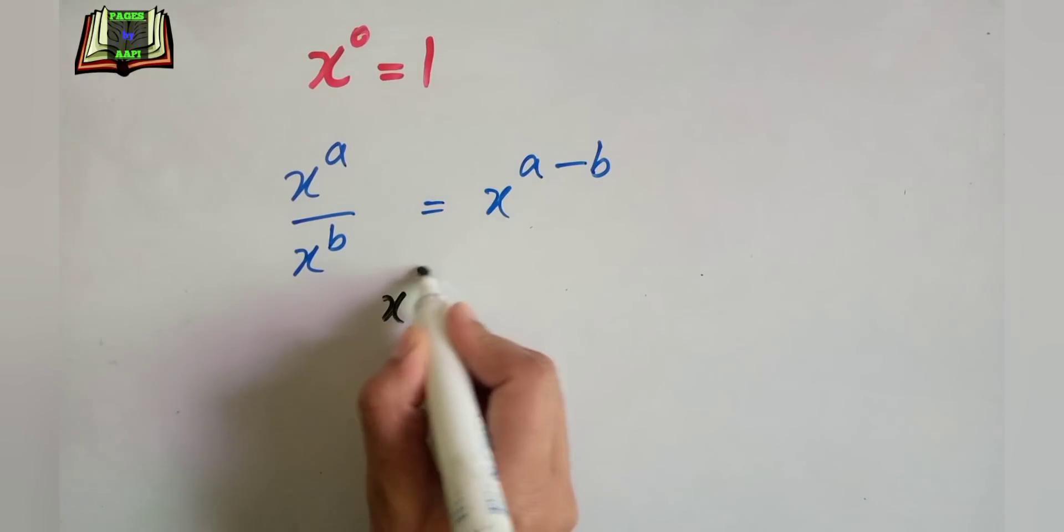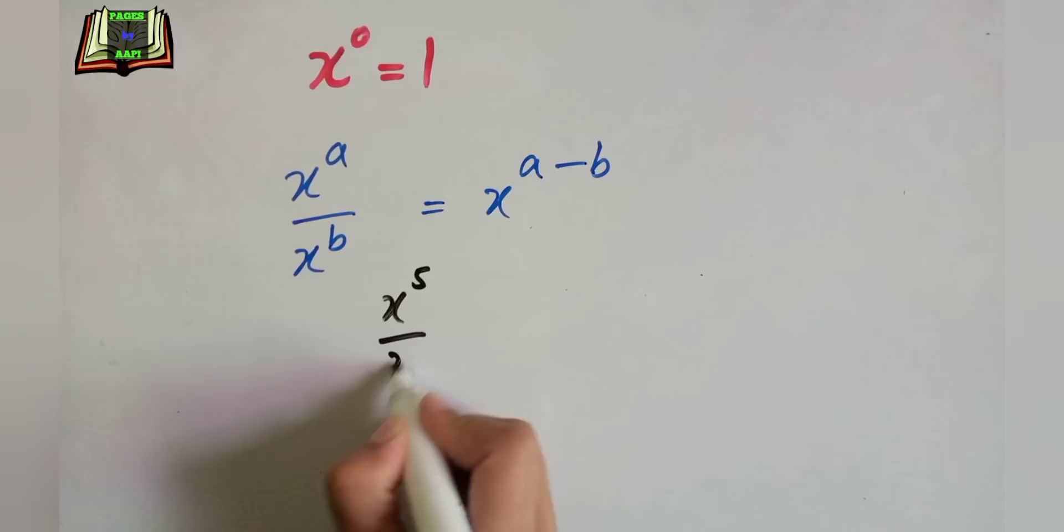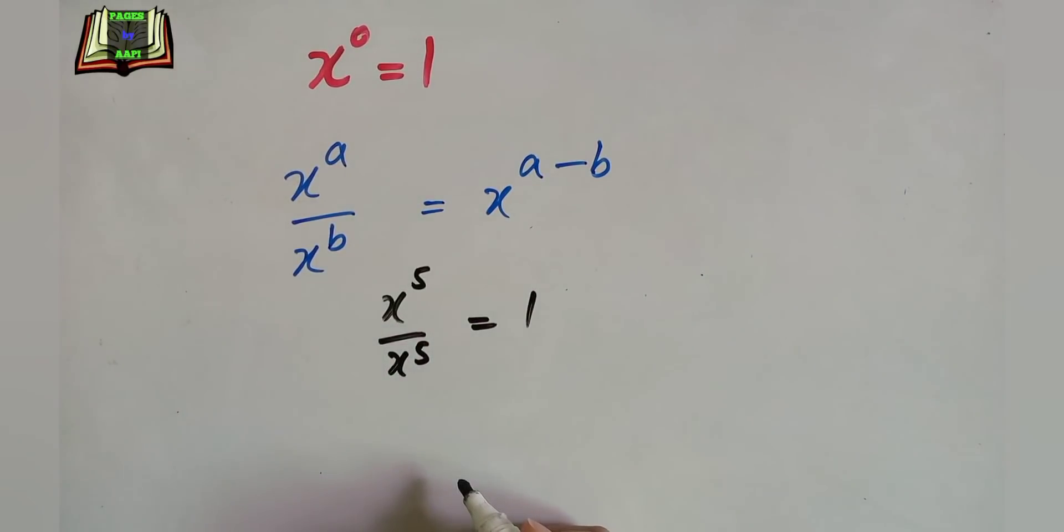x ki power 5 divided by x ki power 5. We know that it equals 1, which is also x ki power 0. Hence it is proved that x ki power 0 is equal to 1.